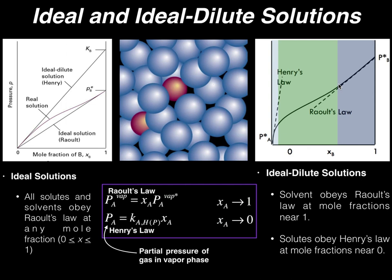Another way of saying that is: whatever species A is, when A is the solute, Henry's Law is most appropriate; when A is the solvent, Raoult's Law is most appropriate.